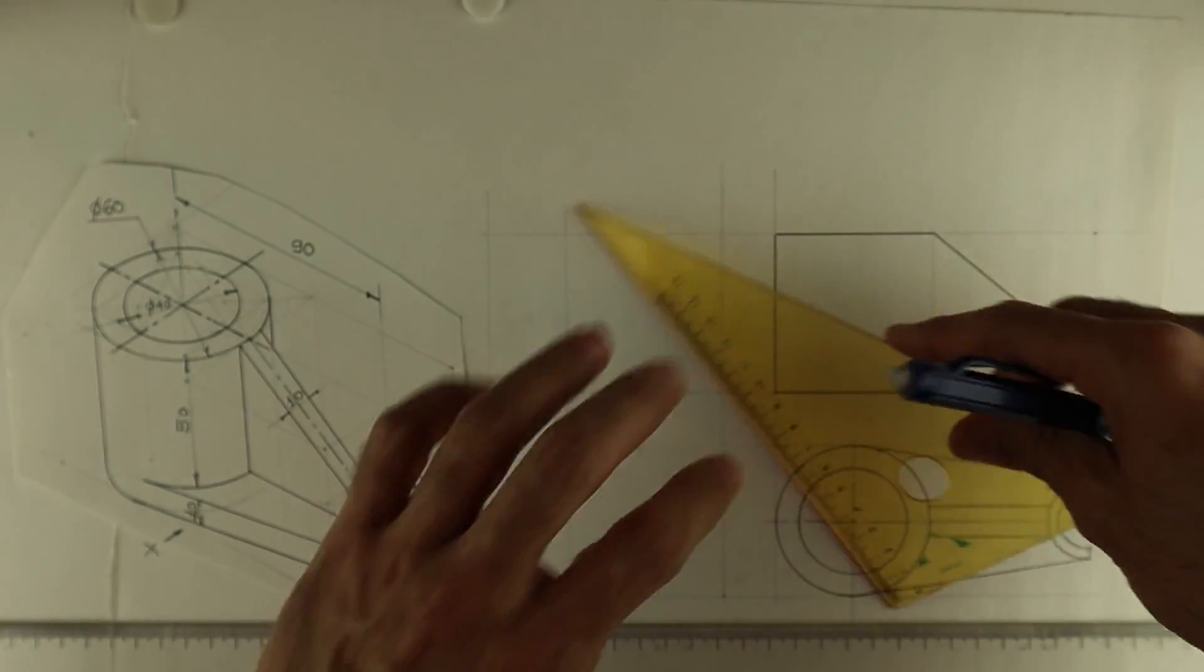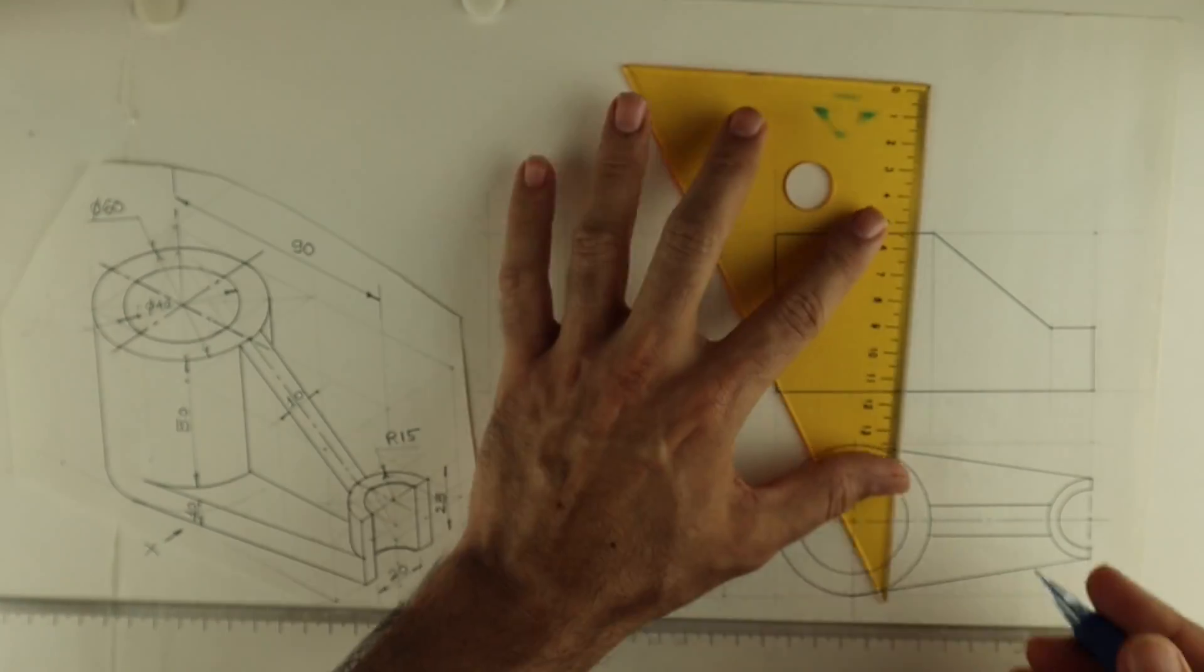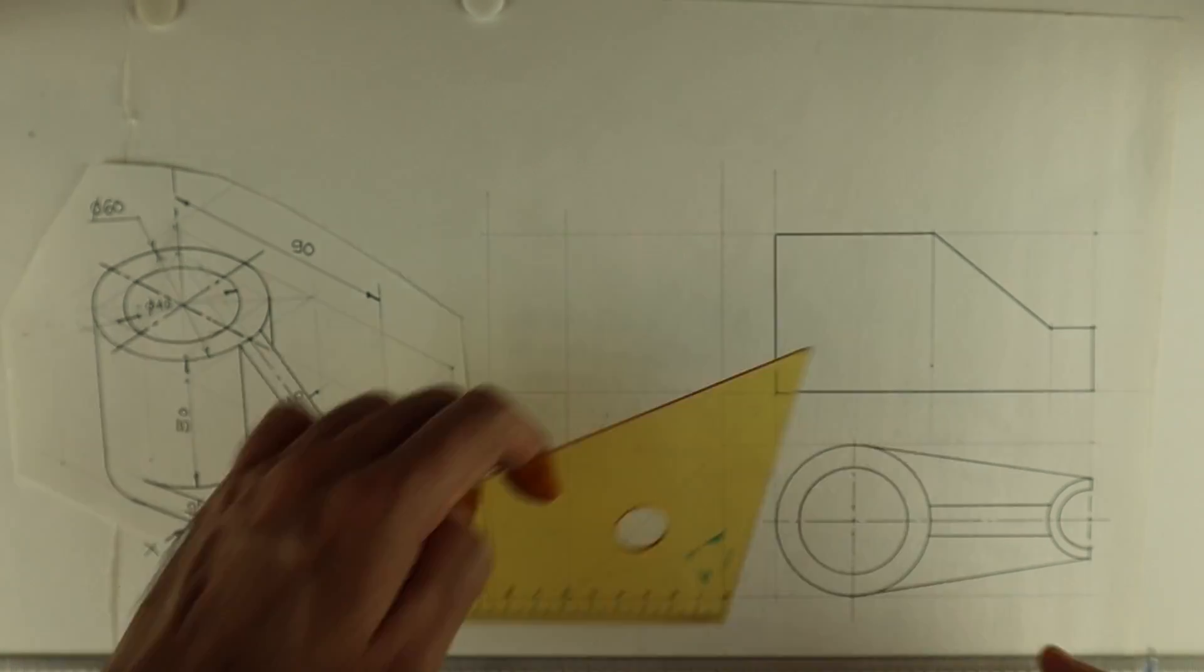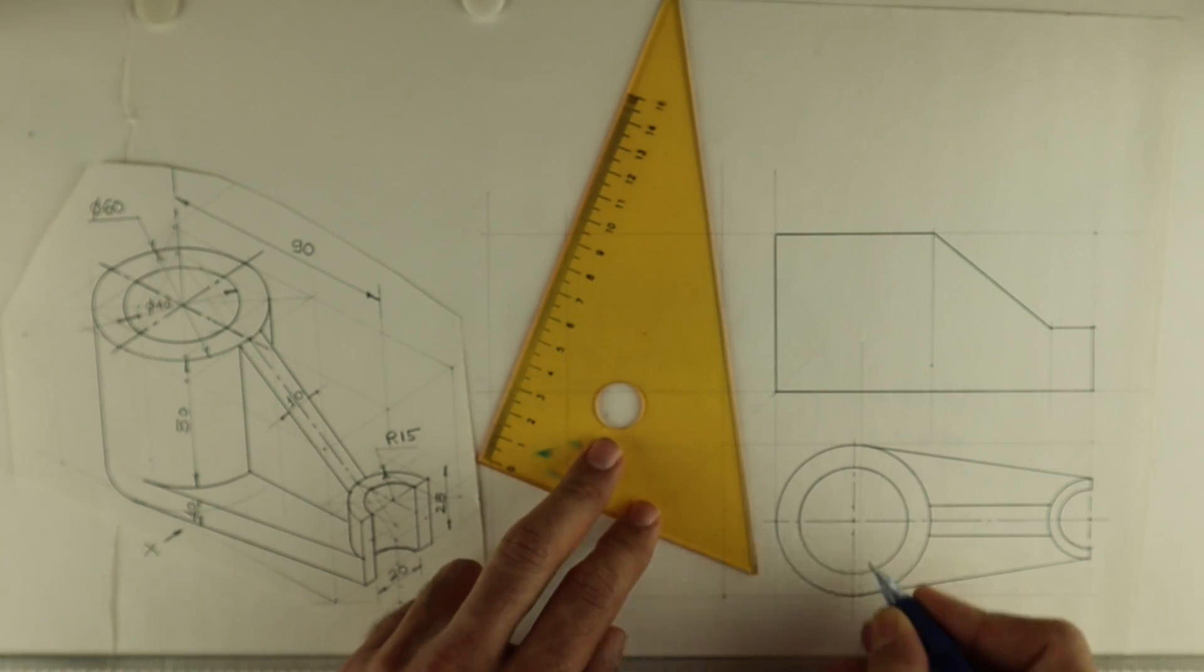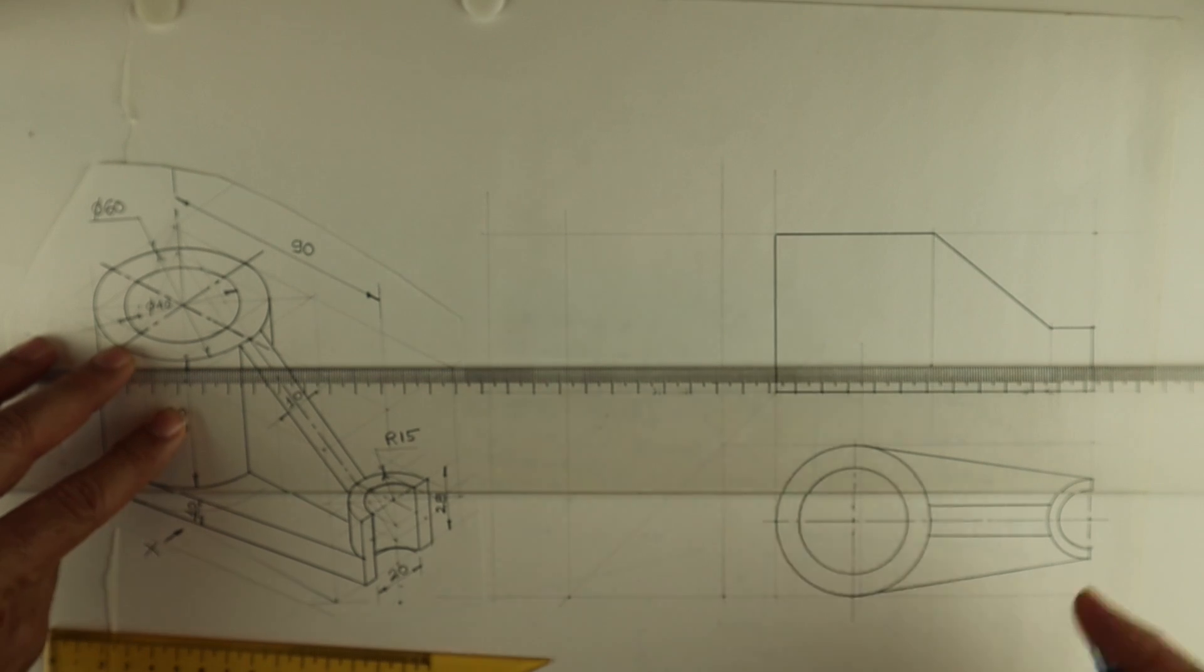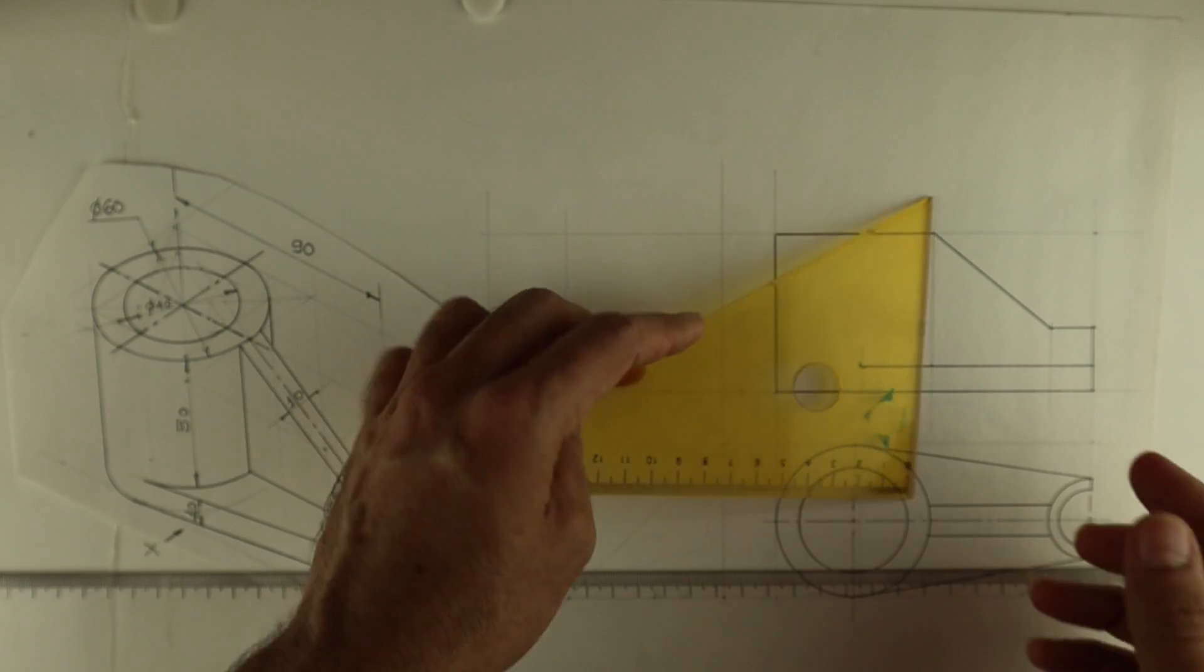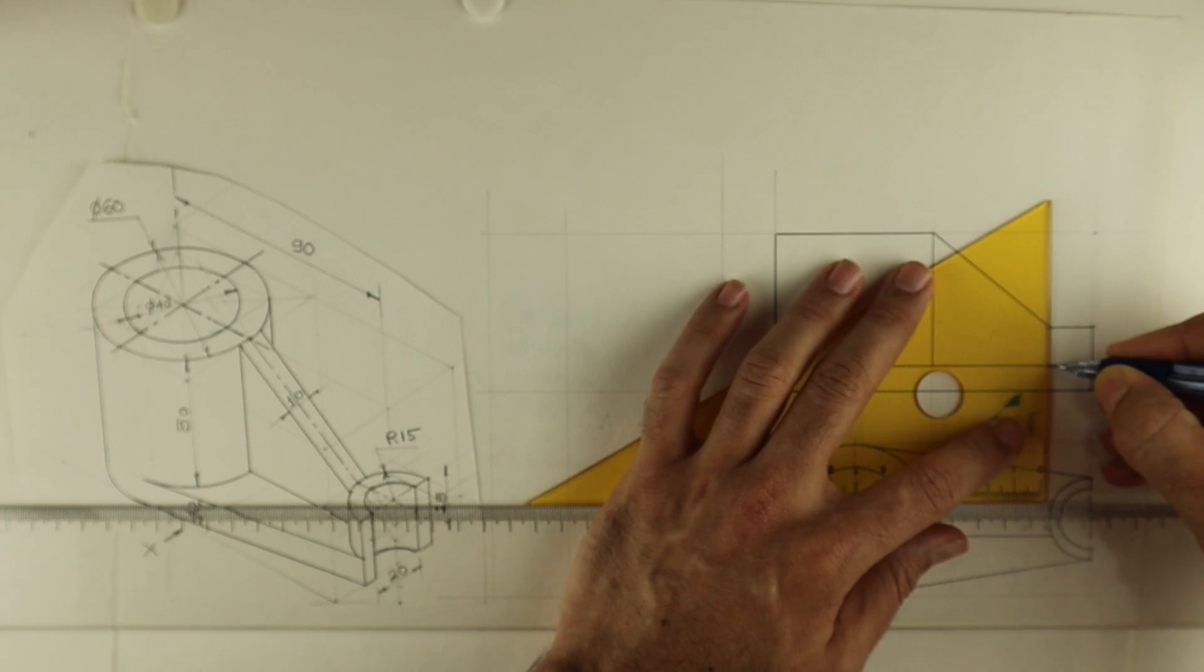Now what we have to do is the 10mm rib. First we will draw this line from here, a horizontal line till wherever it touches in top view. From top view we need to project because we don't know the exact place where it is ending. What we need to show is a merging curve like this, a small curve. It indicates that it is merging somewhere but we don't know exactly where because it's a tangent.